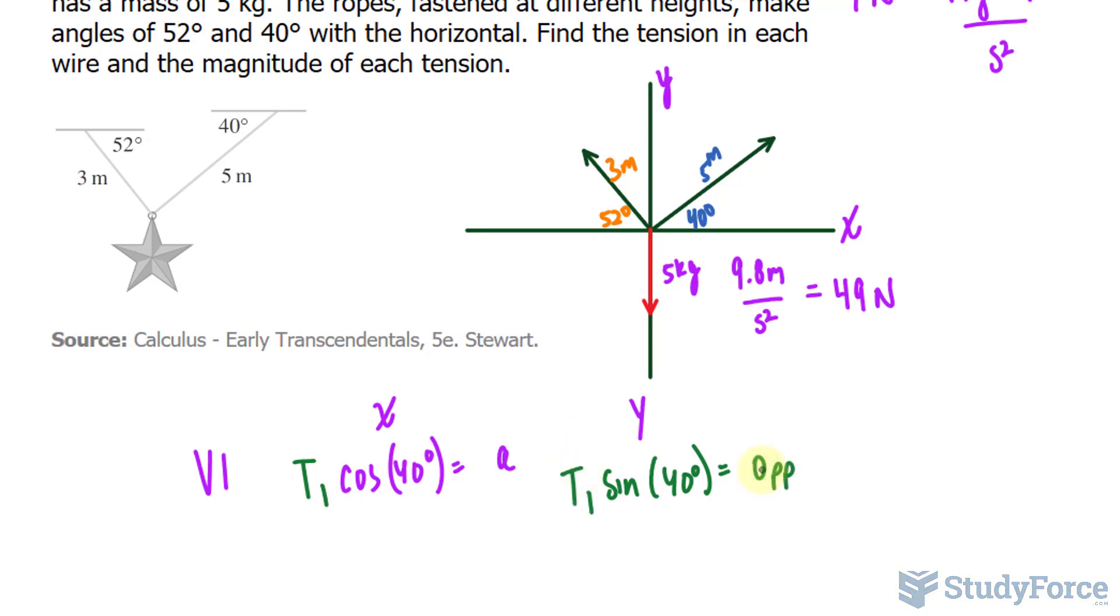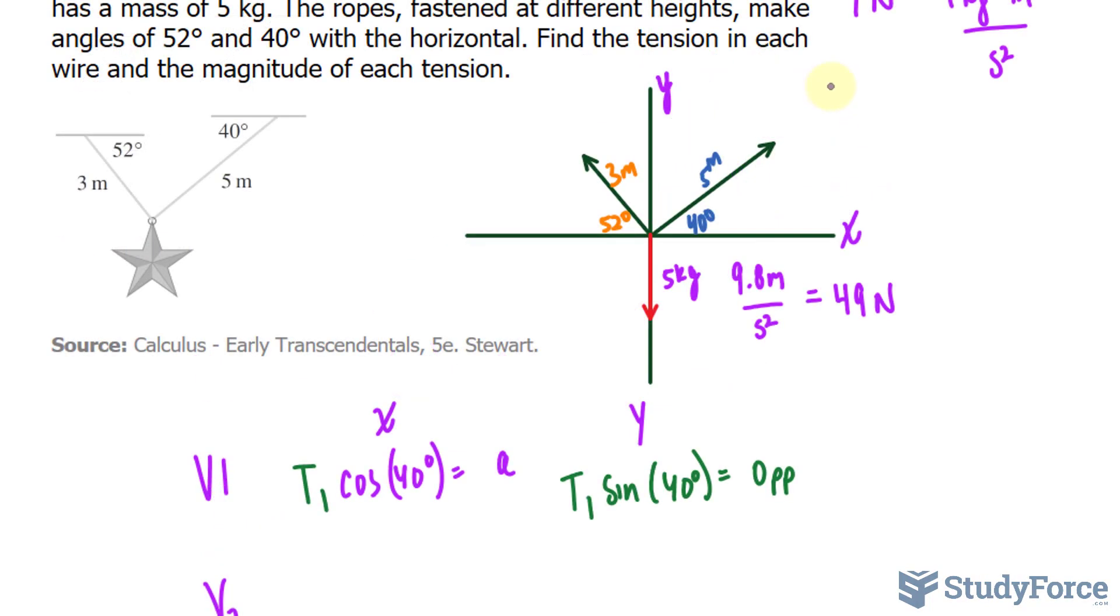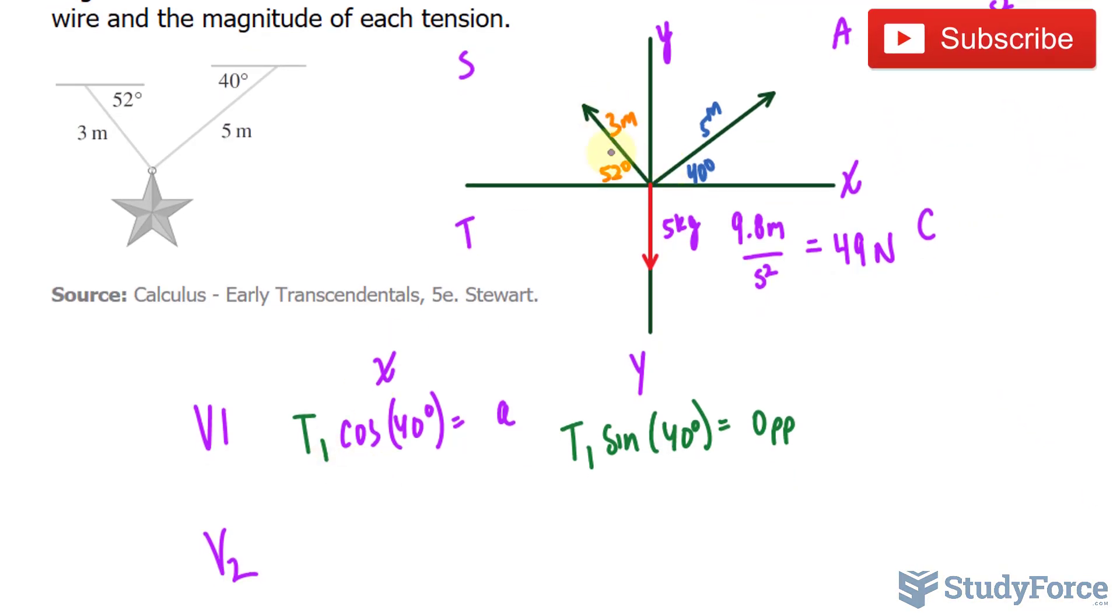Now what we have to do is continue this process for each of these vectors. Let's call this vector 2, and remember the CAST rule? All trigonometric functions are positive here, only sine is positive here, tangent is positive in this quadrant, and cosine is positive in this quadrant only.